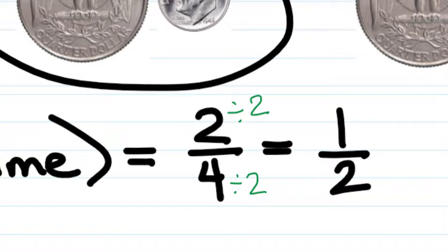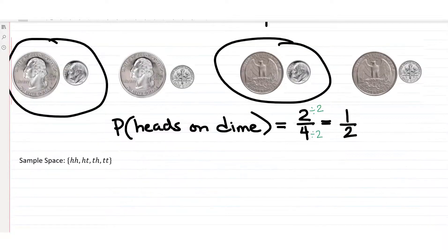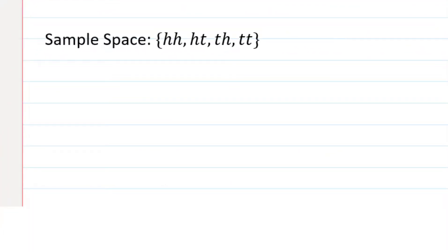Now normally, we don't have the diagram with the quarters and the dimes. So how would we answer this question without it? Well that's where our sample space we found in Part A comes in.